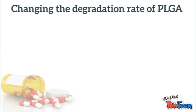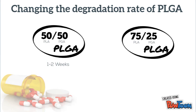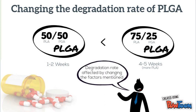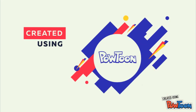For example, a PLGA polymer with a composition ratio of 50 to 50, composed of 50% PLA and 50% PGA, degrades in 1 to 2 weeks. Whilst a PLGA polymer with a composition ratio of 75 to 25 will degrade in 4 to 5 weeks, due to a higher presence of PLA molecules. The degradation rate of the polymer can therefore be changed by modifying any of the factors mentioned.